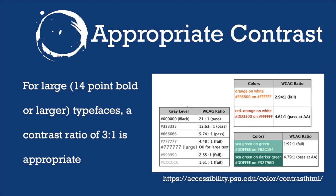This chart from Pittsburgh State University shows the contrast ratios of some common color combinations. Black on white is 21 to 1, while a very light gray on white scores only 1.61 to 1 — a failing score. Orange on white scores only 2.94 to 1, which is a fail, while red-orange on white scores 4.61 to 1, which is passing. Sea green on green does not pass, while sea green on darker green scores 4.79 to 1, which is passing. These guidelines are based on the Web Content Accessibility Guidelines, which are international standards aimed at making the web accessible to everyone.